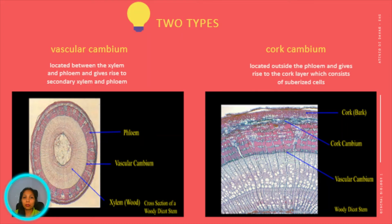Vascular cambium is an internal cylinder of meristem that produces most of the diameter of a woody root or stem. It is located between xylem and phloem, and gives rise to secondary xylem and phloem. Cork cambium, on the other hand, is a lateral meristem that gives rise to parenchyma to the inside and cork to the outside. Cork cambium is located outside the phloem and gives rise to the cork layer, which consists of suberized cells.